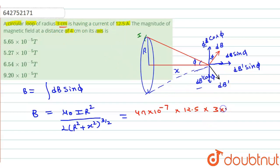it will be equal to 3 into 10 to the power minus 2 raised to the power 2 divided by 2, and r is again 3 into 10 to the power minus 2 raised to the power 2 plus x. x is given 4 centimeter.